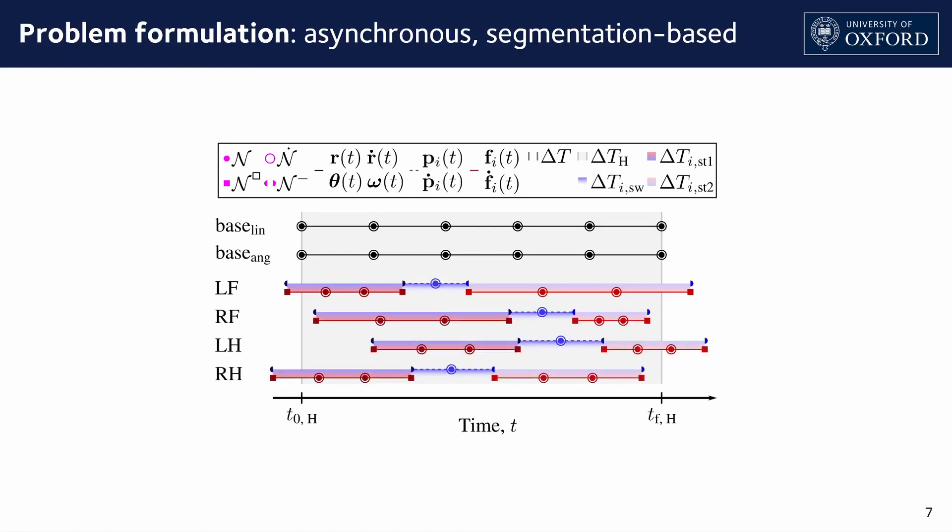This applies to all legs. The overall problem is defined between the earliest beginning of any first stance phase and the latest ending of any second stance phase. Notably, the horizons of the feet and the base are asynchronous. Our approach allows for the constraints to be applied at the nodes or anywhere along the connecting polynomials.